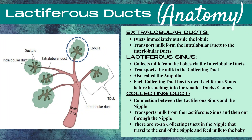So on our journey through the milk ducts, starting with the smallest ducts — the ductules — the milk travels from the acinar cells through the ductules to the intralobular duct, which is within the lobule. Then it travels out of the lobule to the extralobular duct. Extralobular ducts are located immediately outside the lobule and transport milk from the intralobular ducts to the interlobular ducts, which are outside of the lobule.